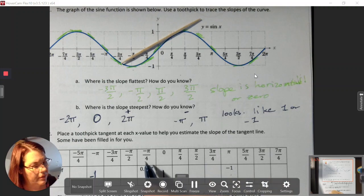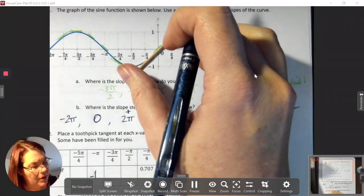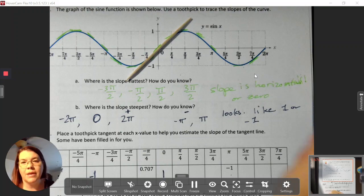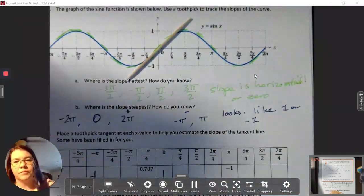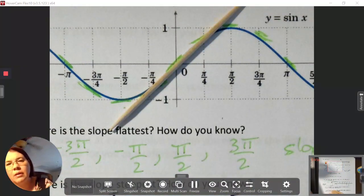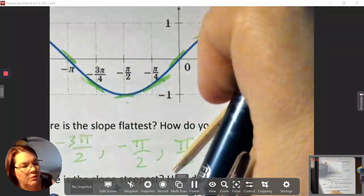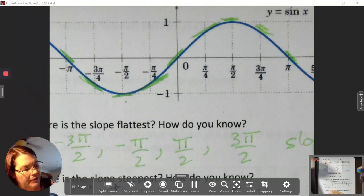Place a toothpick tangent at each value to help estimate the slope of the tangent line. They told me that pi fourths is 0.707, and at pi it's negative one, and at zero it's one. See how the toothpick is touching at both places? It looks like those two have the same slope.